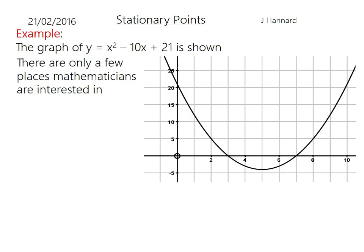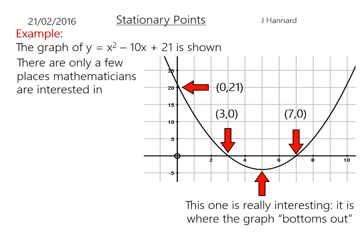The graph of y equals x squared minus 10x plus 21 is shown below. There are only a few places that us mathematicians are actually interested in. We've got the point where it cuts the y-axis and the points where it cuts the x-axis, and also this point here where the graph sort of bottoms out. It looks a little bit flat, and you could possibly draw a line of symmetry down there depending on the equation of the curve. But that's where the gradient equals zero, where it bottoms out. So that is called a stationary point and it has no gradient because it kind of stops.